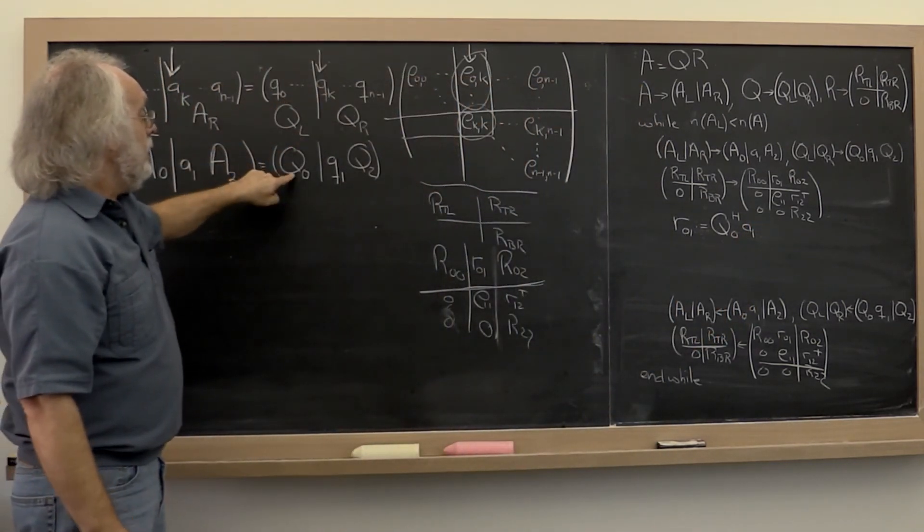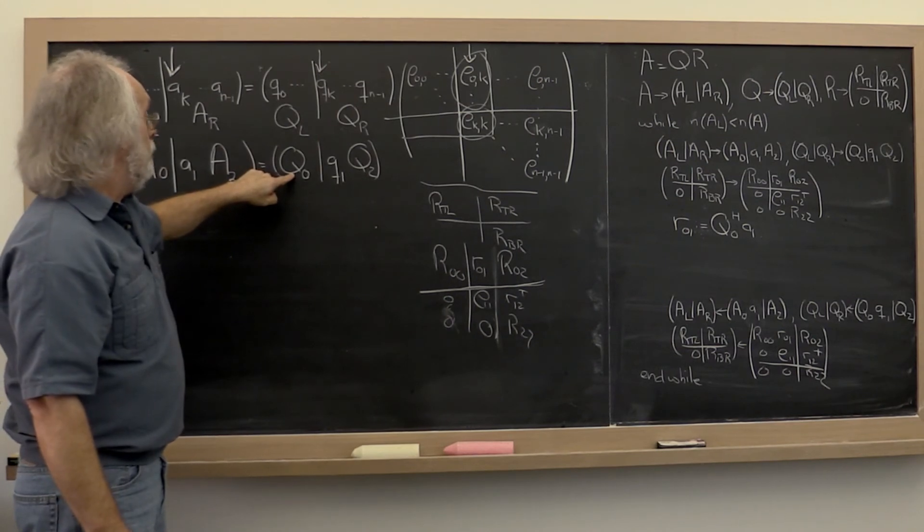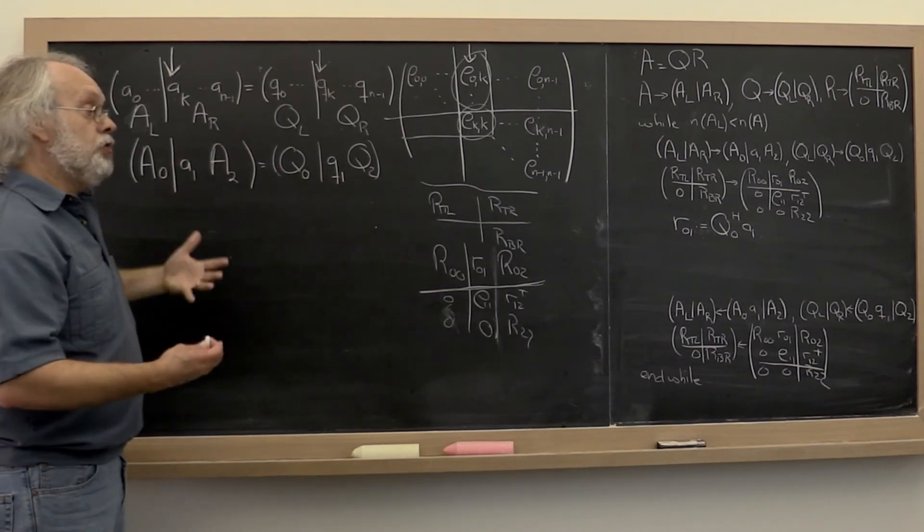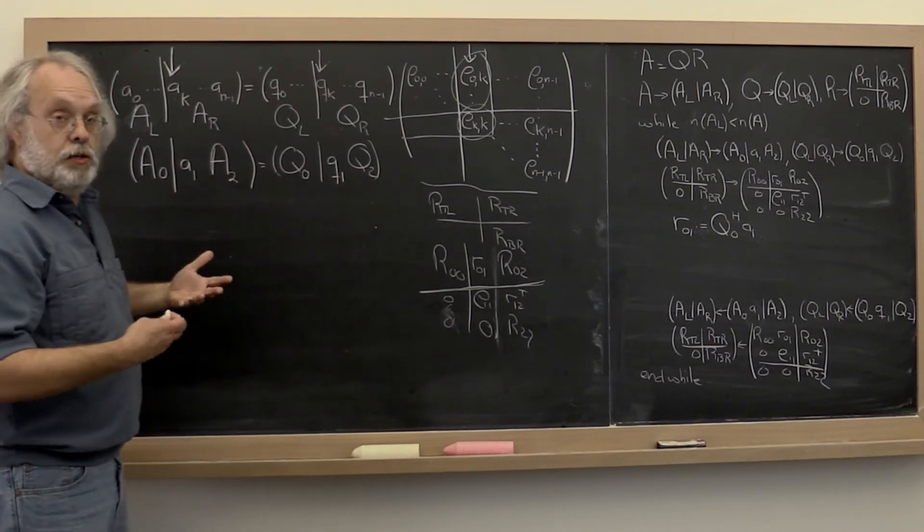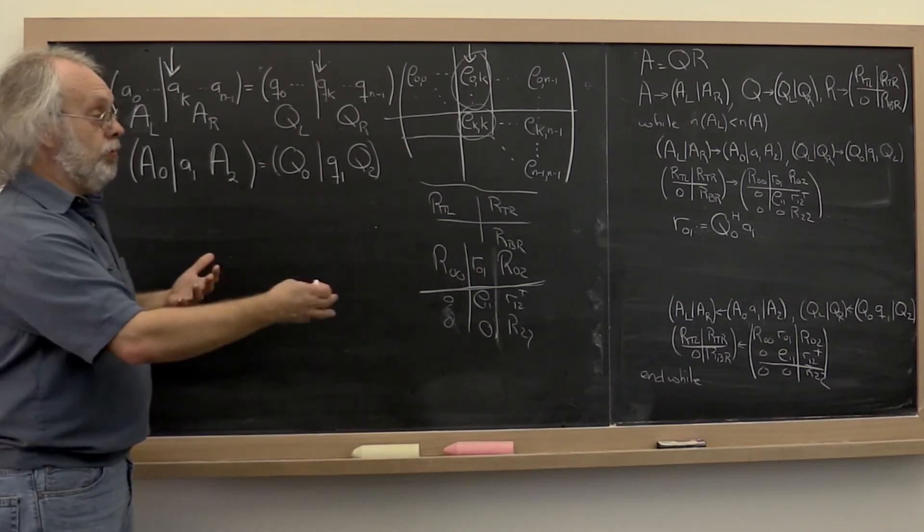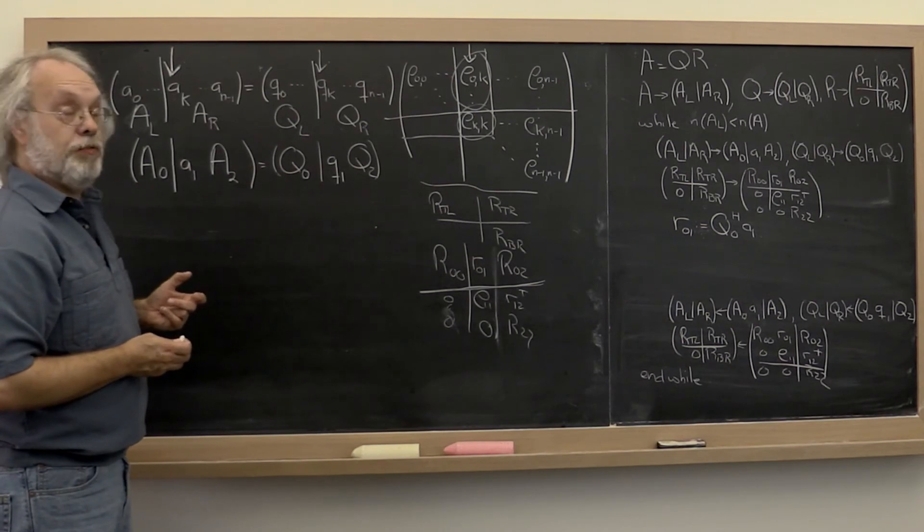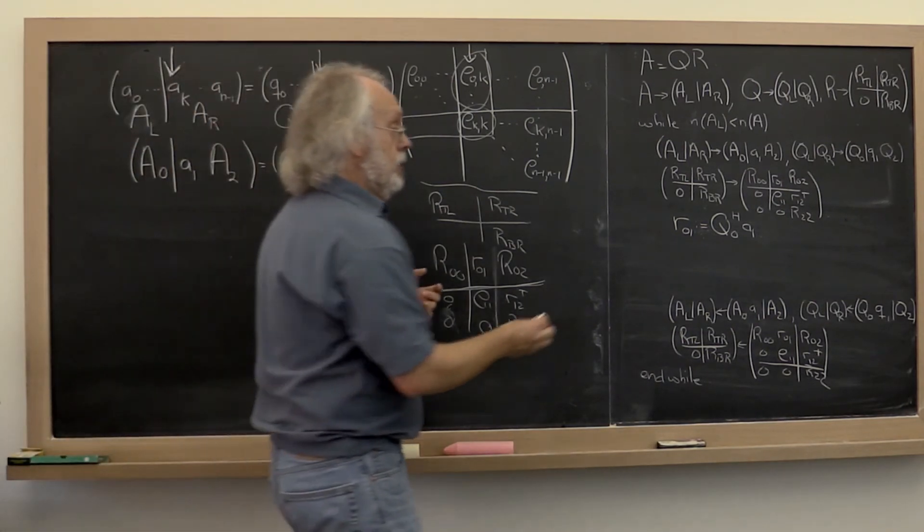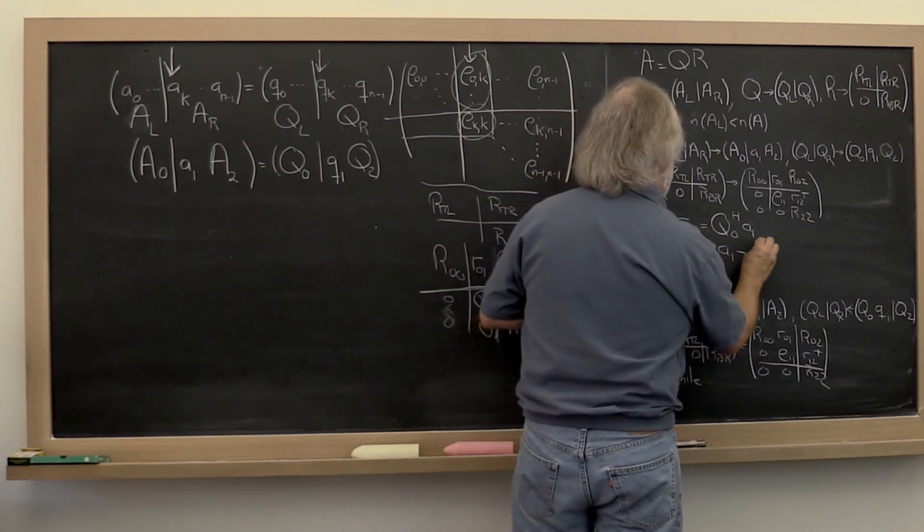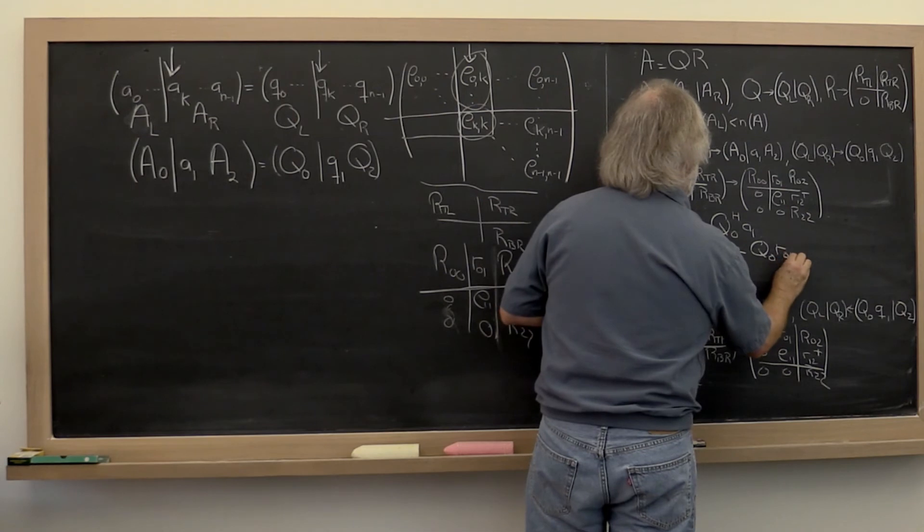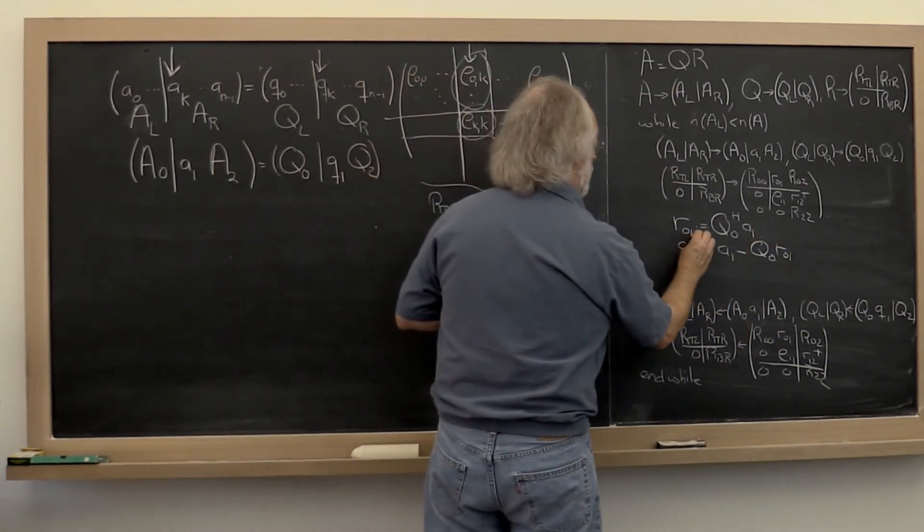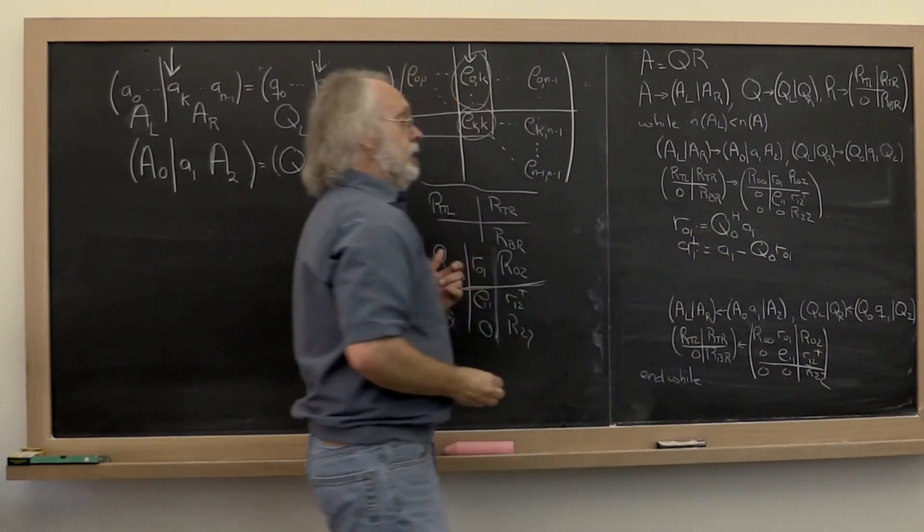That then tells us what linear combination of the columns of Q we need to subtract off of the current column of A to compute the component of that column perpendicular, orthogonal to Q_0 through the columns of Q that we already computed. So that becomes A_1 becomes A_1 minus Q_0 times these coefficients that tell us what linear combination to take. And that is the perpendicular part of A_1.